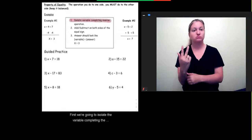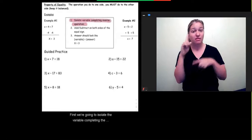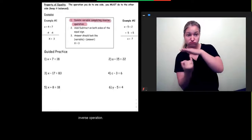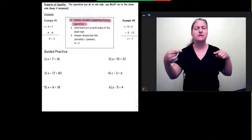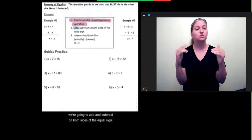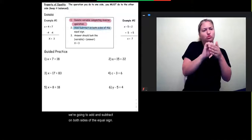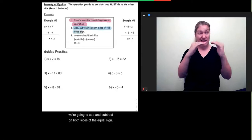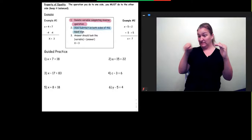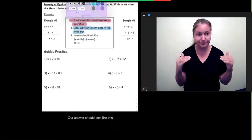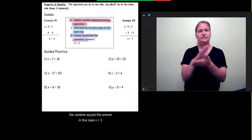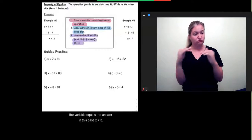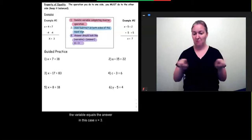First, we're going to isolate the variable, completing the inverse operation. Next, we're going to add and subtract on both sides of the equal sign. Then, our answer should look like this. The variable equals the answer. In this case, x equals 3.